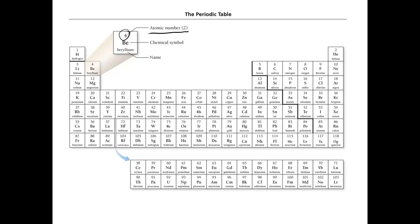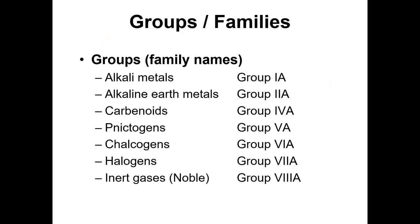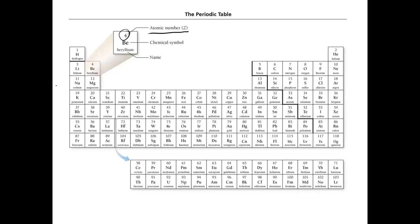We also have rows and periods. The rows — like this here would be the third row — we call those periods. Rows are called periods, and columns are called groups. These groups have names. Every element in a particular group has a similar character, similar electronic makeup, similar reactivity. And that's why they're put together in a group.